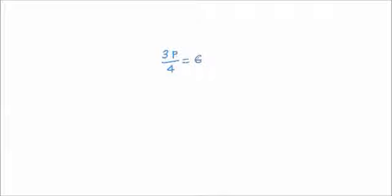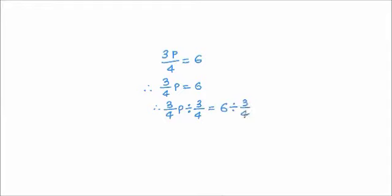One more: 3p/4 = 6, which is also written as (3/4)p = 6. Since 3/4 is multiplying p, we divide both sides by 3/4. Dividing by 3/4 means multiplying by the reciprocal 4/3: p = 6 × (4/3) = 24/3 = 8. Therefore p = 8.